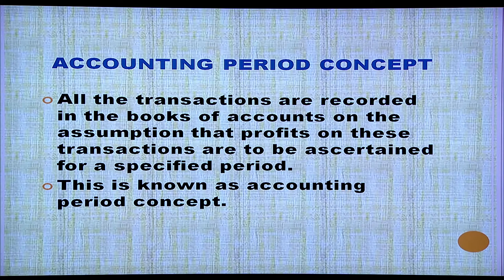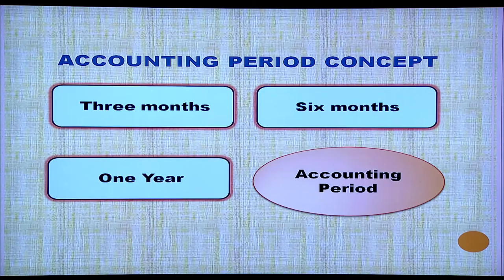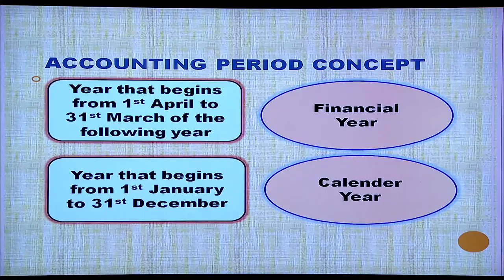Next is the accounting period concept. All transactions are recorded in the books of accounts on the assumption that profits on these transactions are to be ascertained for a specific period — this is known as the accounting period concept. The indefinite life of the business concern is divided into different parts known as the accounting period, which can be 3 months, 6 months, or 1 year. The financial year begins from 1st April to 31st March of the following year, and the calendar year begins from 1st January to 31st December.